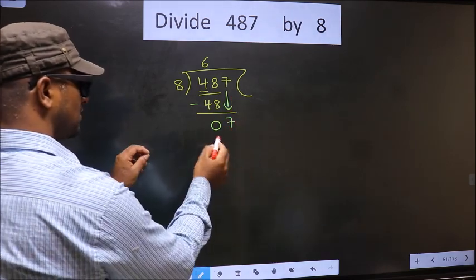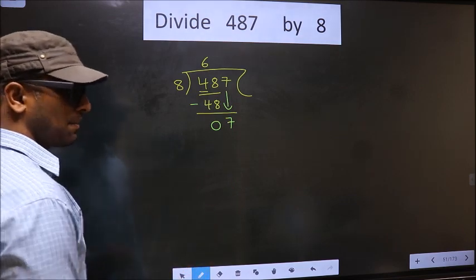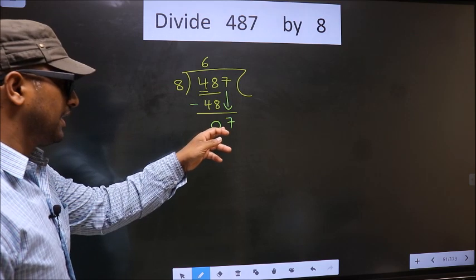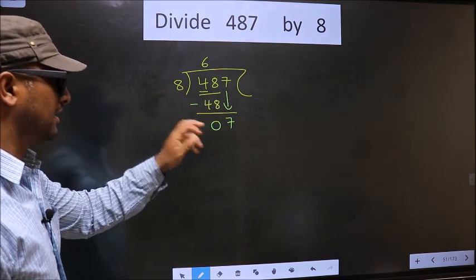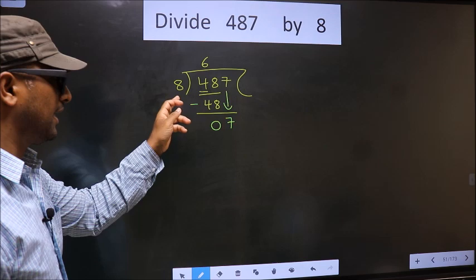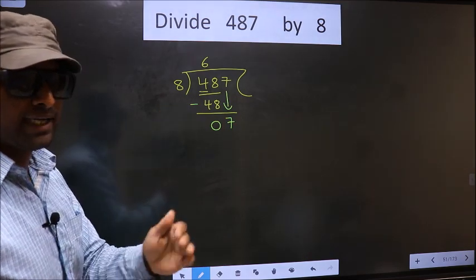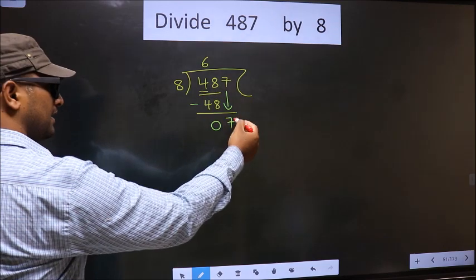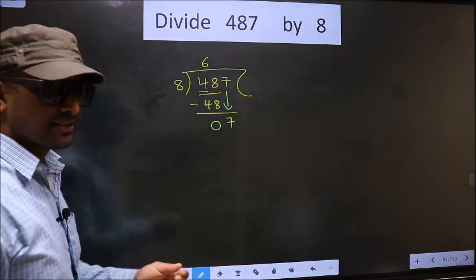And this is where the mistake happens. Here we have 7. Here 8. 7 smaller than 8. So what many do is, they put a dot and take 0 here, which is wrong.